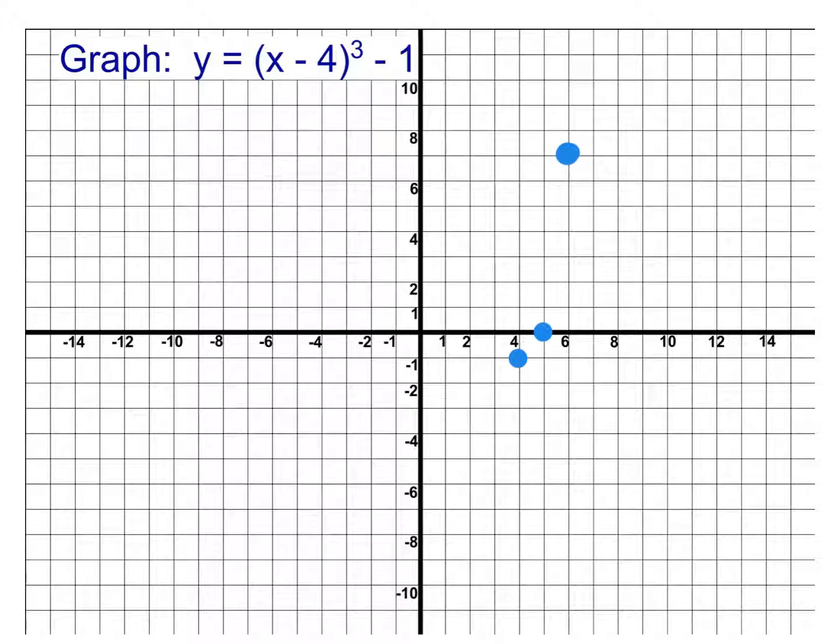Then, we do the same thing on the left side. So, we go left one, down one, and we go left two, down eight as well. Plot each of those points. Make sure that each of those points is clearly labeled. Easy to see that there's actually a point there, so that when you draw the graph through, it's easy to tell where those points were. That way, if you look back at this later, it's a lot easier to follow with those points on there than if you just have the curve.